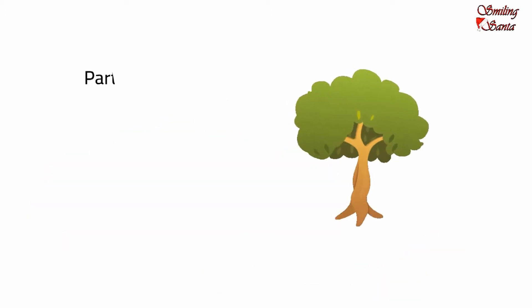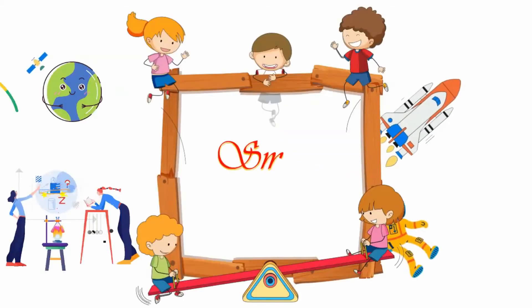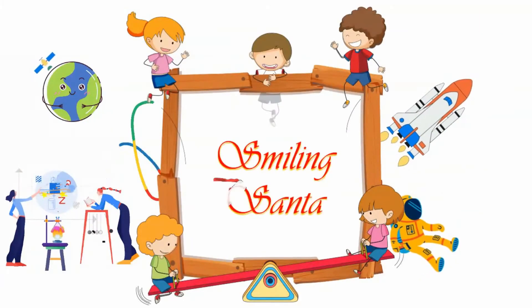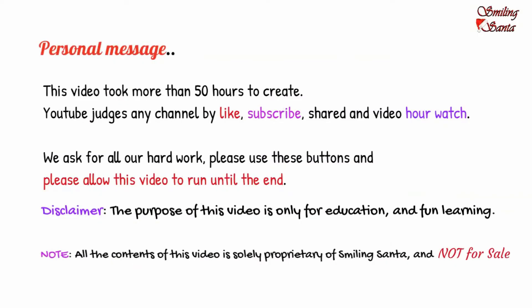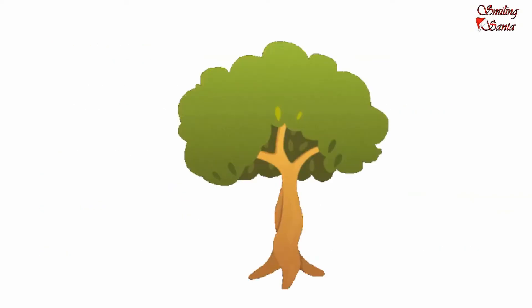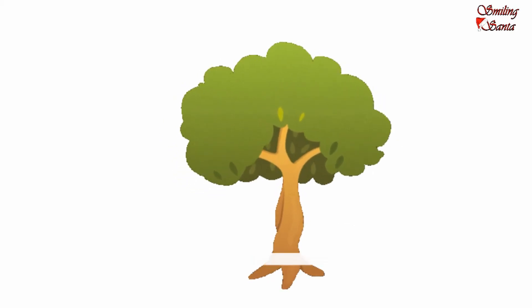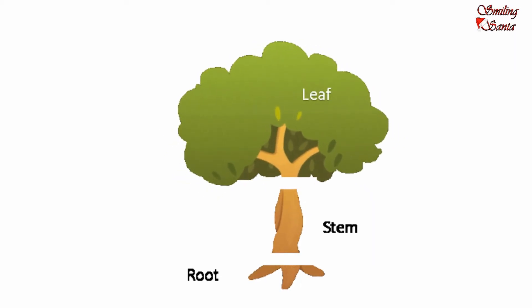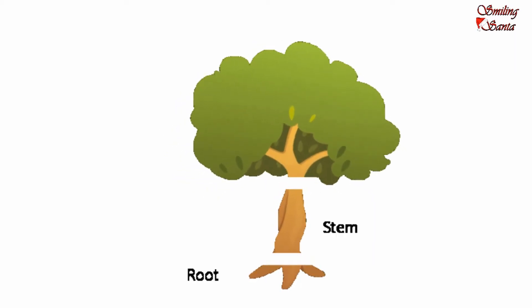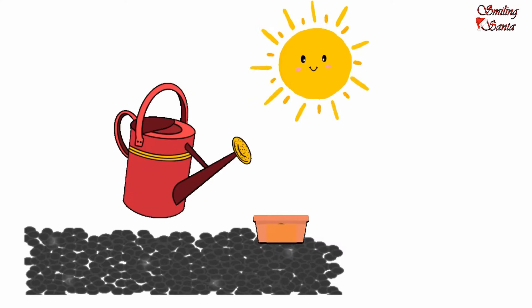Today we will learn about different parts of a plant. A plant has many different parts. Each part has a unique function to perform. These parts help the plant to survive, grow and reproduce. Plants need soil, water, sunlight and air to grow.